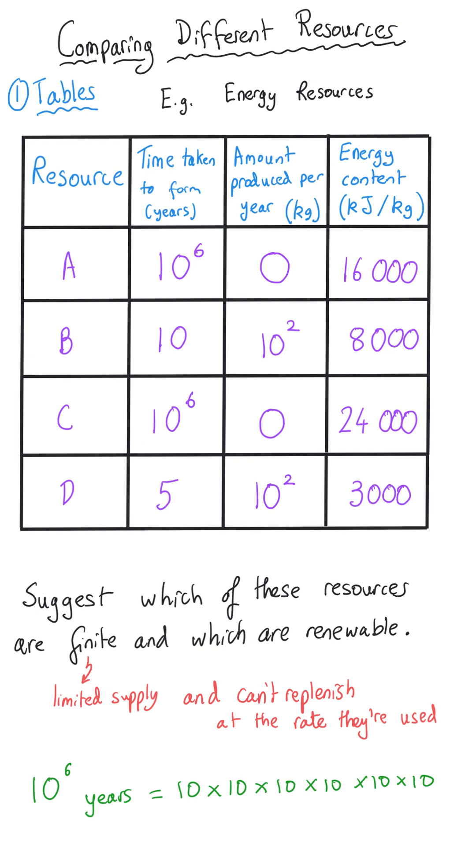That means a million years because ten to the six is a one with then six zeros after it. Ten raised to the power of six. And so the resources that take a million years to form are the fossil fuels which are non-renewable, they are finite.